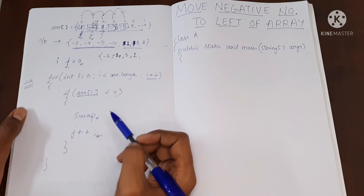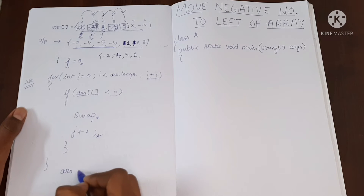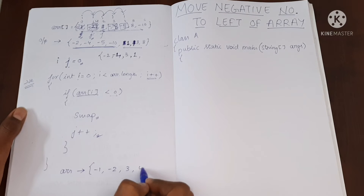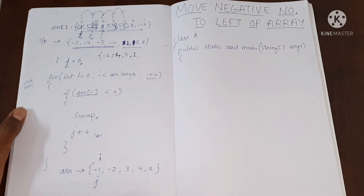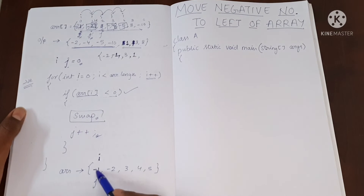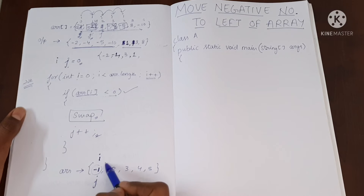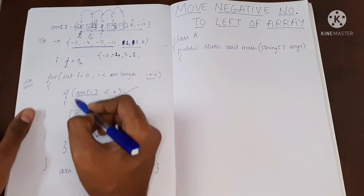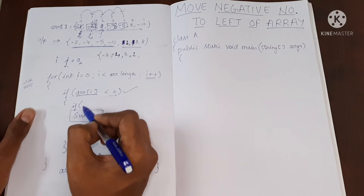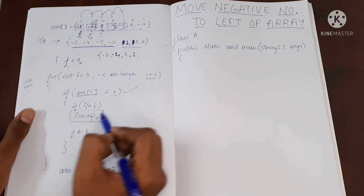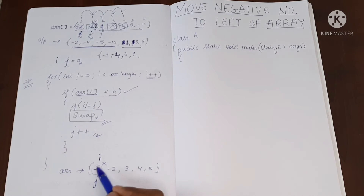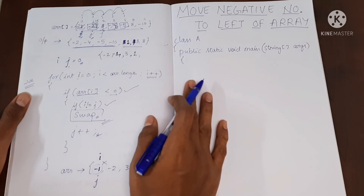Now let's discuss one more small detail. Let's say we have an array with values minus one, minus two, three, four, five. Initially J will be pointing to the zeroth index and I will also be pointing to the same index. When we find the value at I to be negative, we're going to do a swap. But if I and J are pointing to the same location, we'd be swapping minus one with minus one — which makes no sense. So before swapping, I'll check one more condition: if I and J are not equal, then only I'm going to swap.